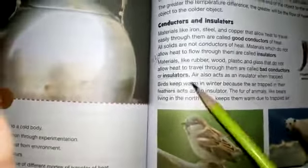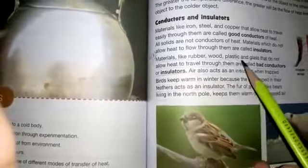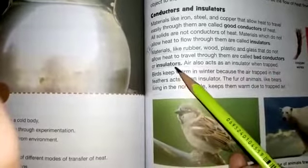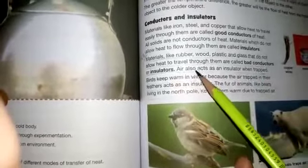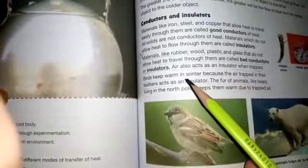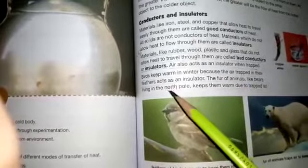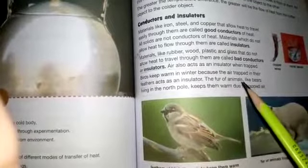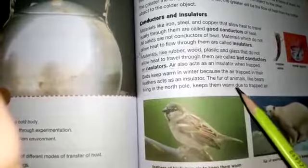The answer is on page number 99. Materials like rubber, wood, plastic, and glass that do not allow heat to travel through them are called bad conductors or insulators. Air also acts as an insulator when trapped. Birds keep warm in winter because air trapped in their feathers acts as an insulator. The fur of animals like bears living in the North Pole keeps them warm due to trapped air.